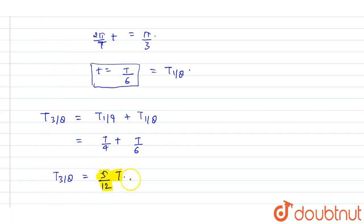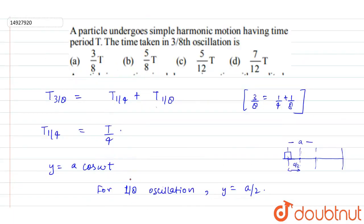Now if we can see in options, then 5/12 T is option C. So C is the correct answer here.